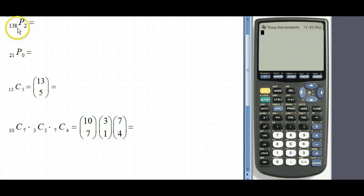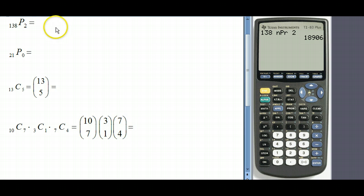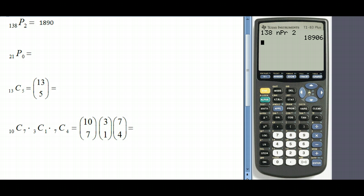To actually do this particular computation we're first going to type in 138, then hit math, go to probability, and then we select option two. Then after that we type in two and then that gives us our answer. If we had 138 things and we grouped them two at a time where order matters, you'll see that we would have 18,906 different groups.